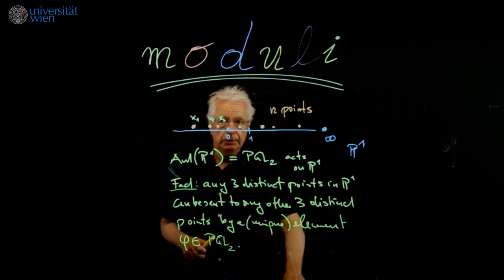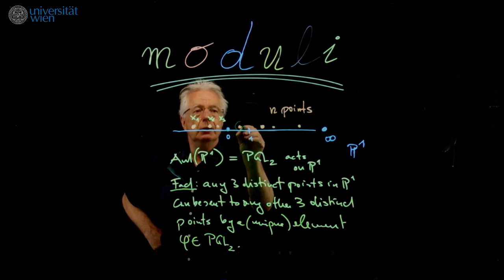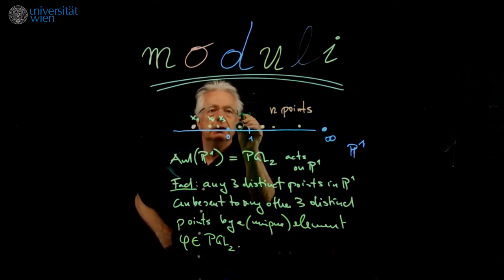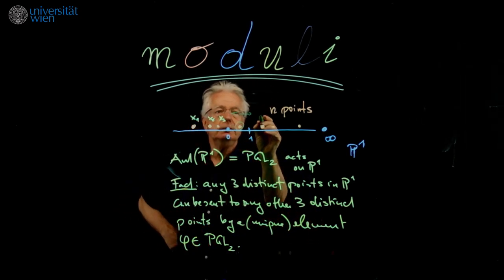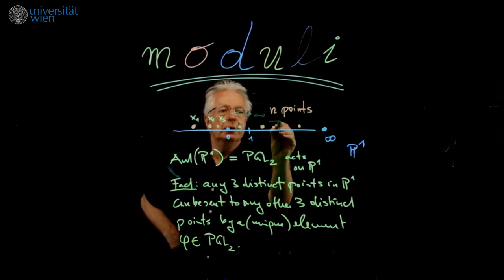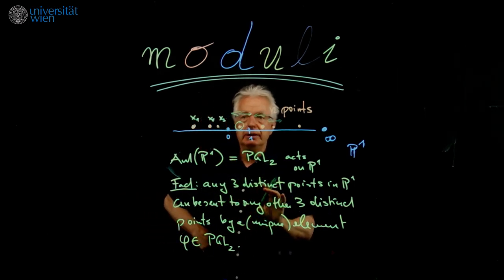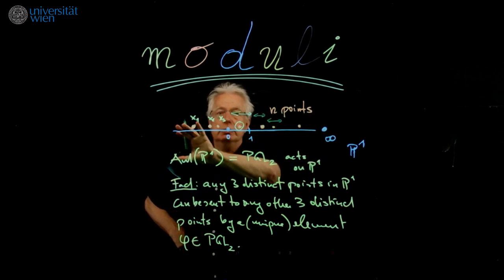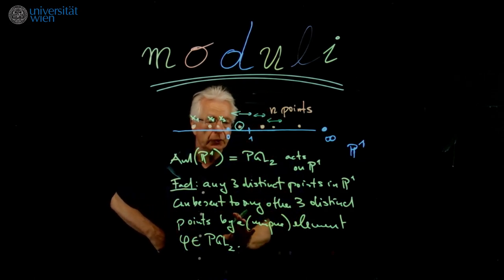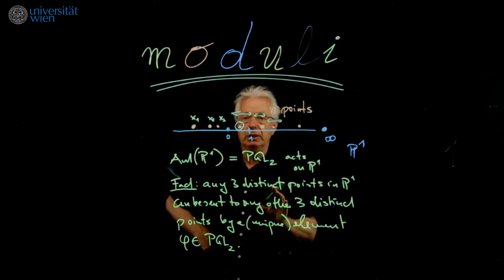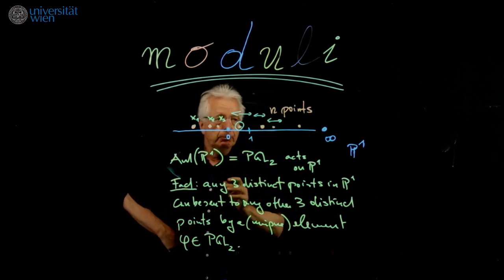That's a fact from linear algebra or projective geometry. Let me try to show you a little bit what's going on. So let's take this point here. It starts to move. And we don't only take one point, we take three points. So let's take these three points and they move. Now, by this fact which is written here, the other points will also start to move. They will stay distinct because it's an isomorphism, a bijection of P^1, but everything starts to move.